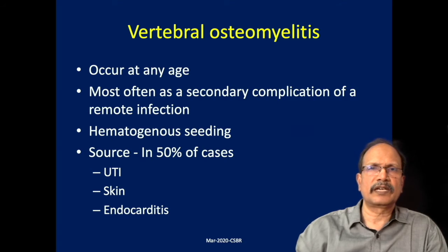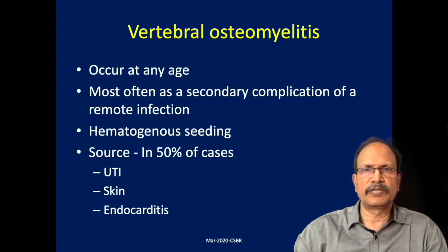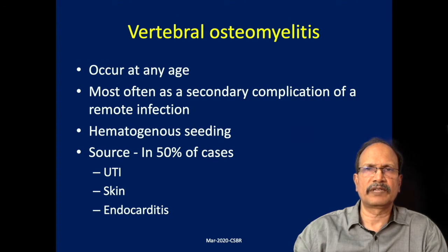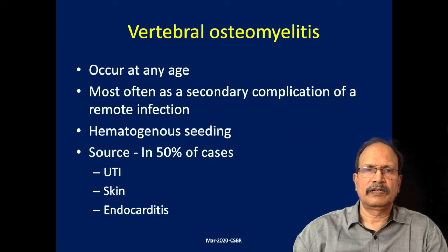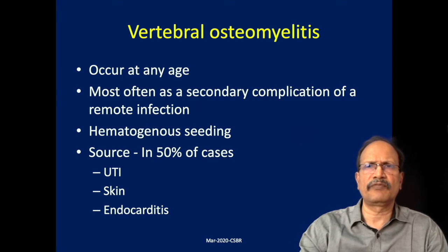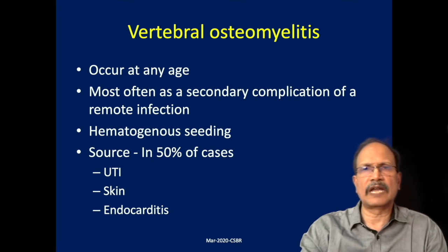Vertebral osteomyelitis can occur at any age but most commonly it is seen in the adult population, and it is a secondary complication of remote infection. It is unusual for the primary infection to occur in the vertebra. Rather, there is a focus of infection somewhere in the body which spreads to the vertebra hematogenously. The source of infection may be UTI, skin infections like boils, or infective endocarditis producing a shower of bacteria-rich vegetations that land in various sites of the body producing abscesses.